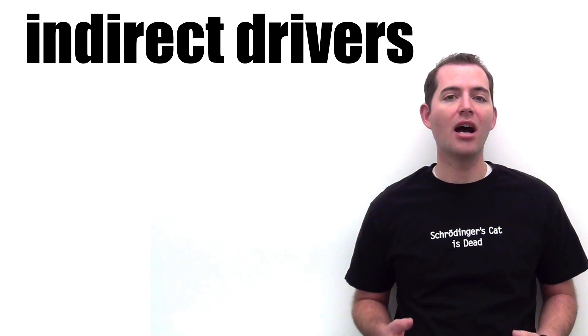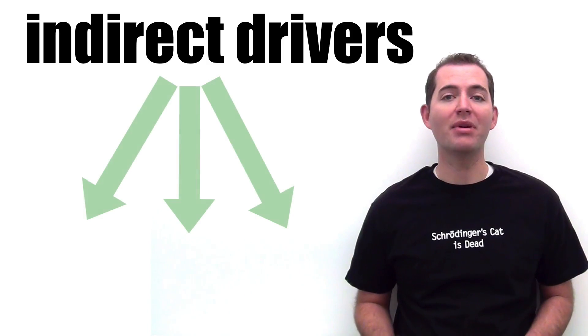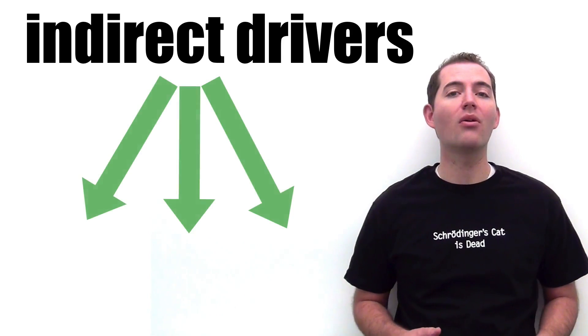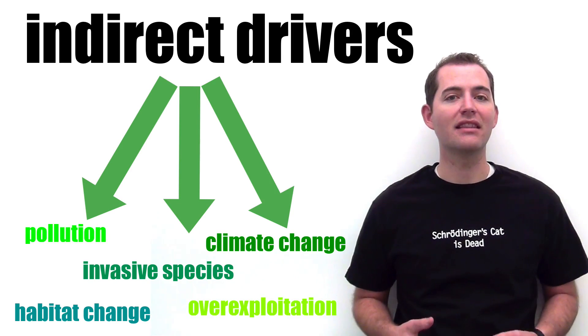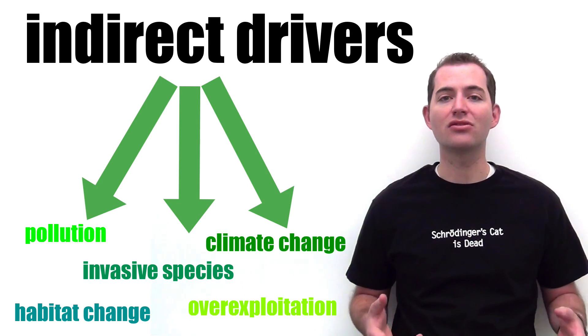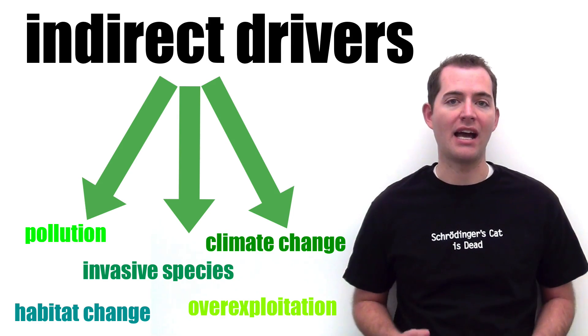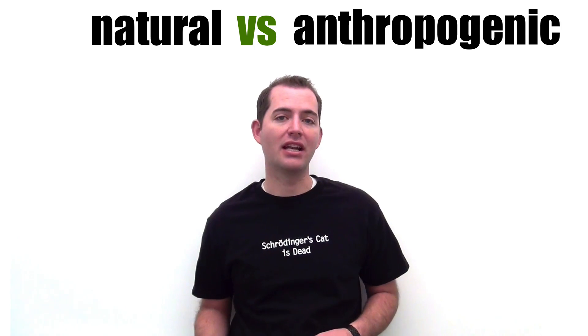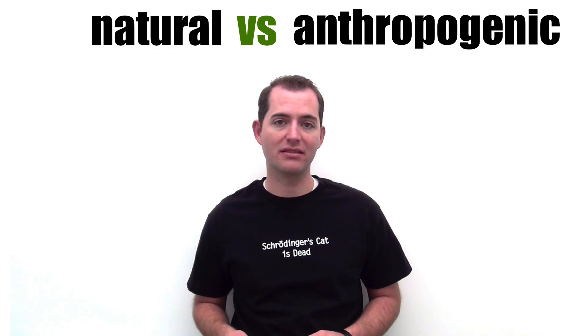Indirect drivers operate more diffusely by impacting one or more direct drivers. In essence, they determine how strong a direct driver acts. Drivers can also be classified as natural or anthropogenic, meaning caused by humans.